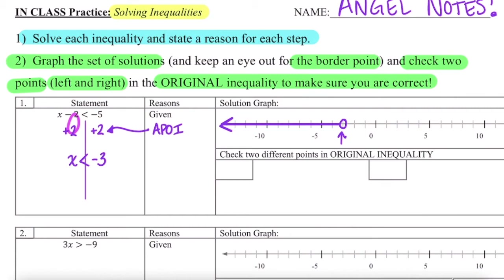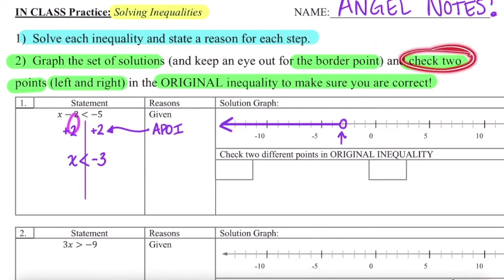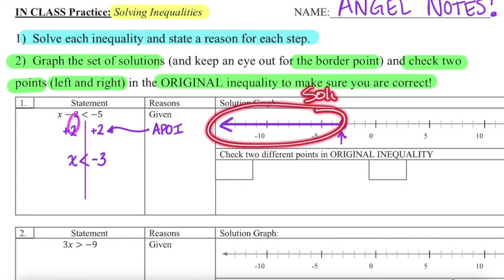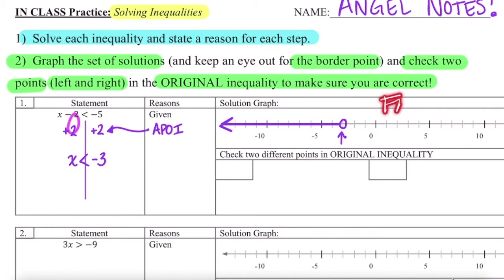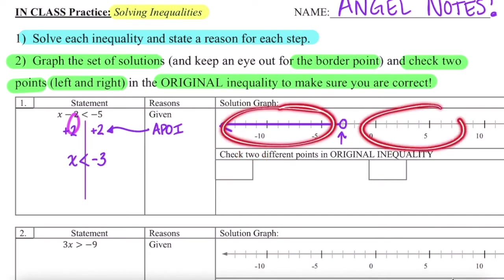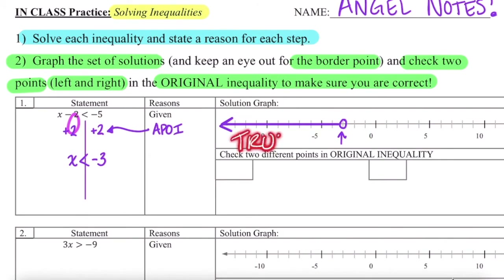We have now solved the inequality, given a reason for each step, and graphed the set of solutions with the border point. But what does it mean to check two points? With inequalities, there are two sides to the graph. On the left are all of our solutions — all the numbers that make it true. And on the right are all of our non-solutions that would make this false. By checking two points, we check a point on the left and a point on the right: one should be true, one should be false.